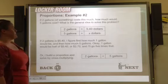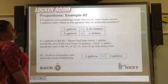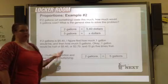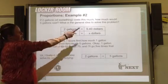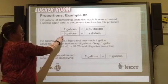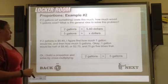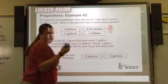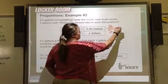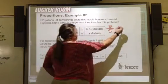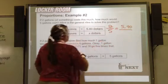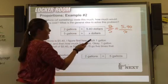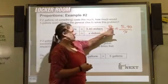Next example: if two gallons of paint cost $5.40, how much would five gallons cost? We create our ratio in fraction form: two over five, where two gallons costs $5.40. I want to find the value for five gallons. I'll do the math to figure out how I get from two to $5.40.